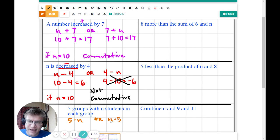Now plug in 10 for n on that one. If n equals 10 again, what do you get? Well, you would get 50 and you get 50. So this one is a check. This is commutative.